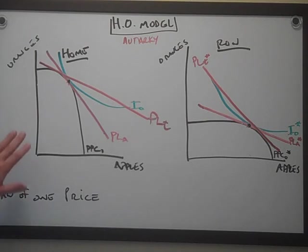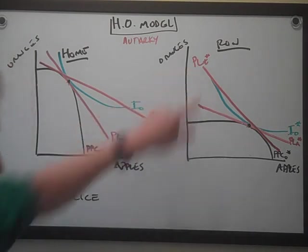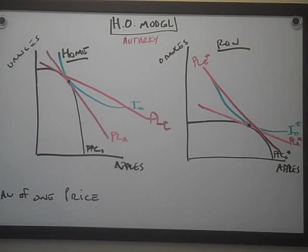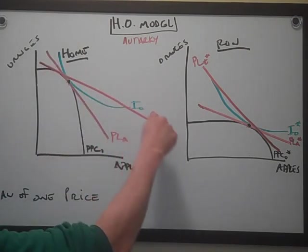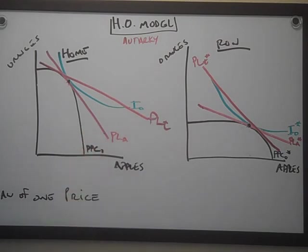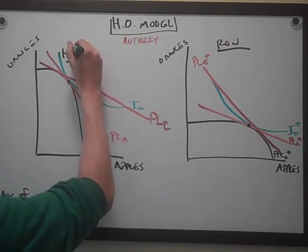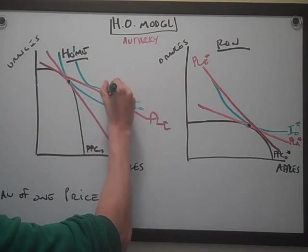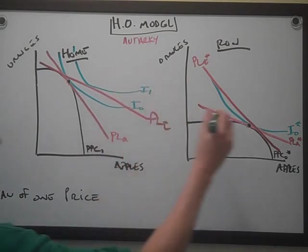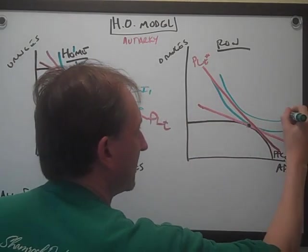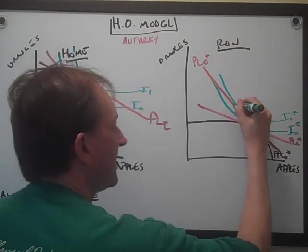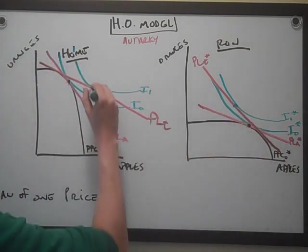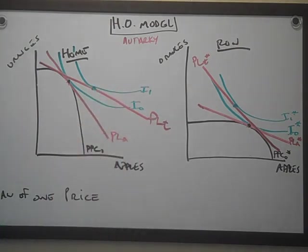The law of one price — pretend the slope there and the slope here are the same. If that's true, prices have converged; the law of one price gives us the same price for both goods. Here's the neat part: if that's your price line, you're no longer constrained by this indifference curve. You can reach the next indifference curve out here — I-1 — and ROW can catch I-1 star. They start operating at this new point and escape the production possibility curve.